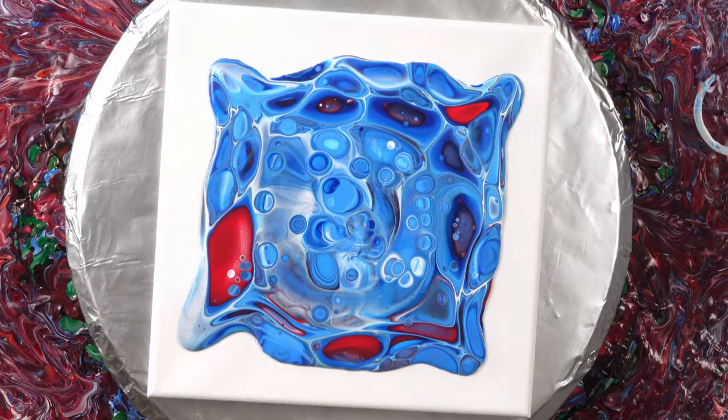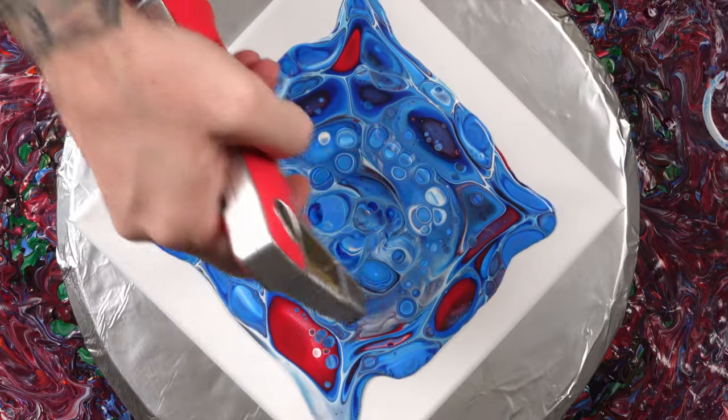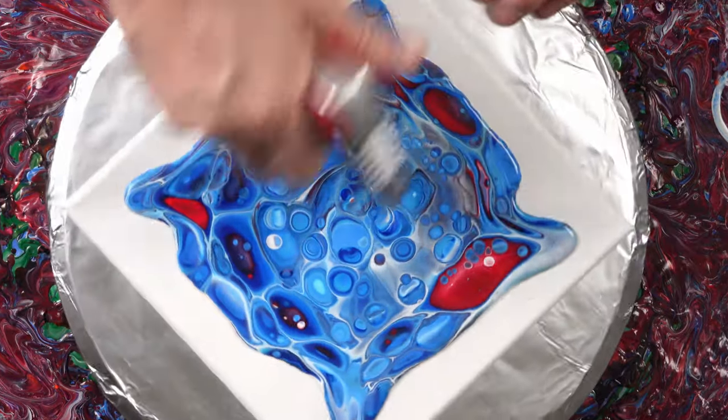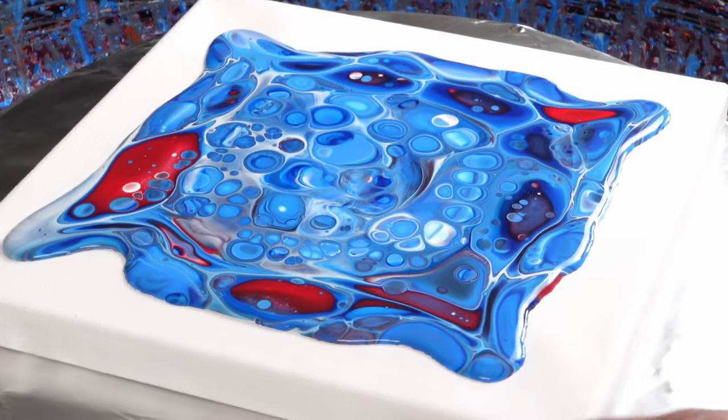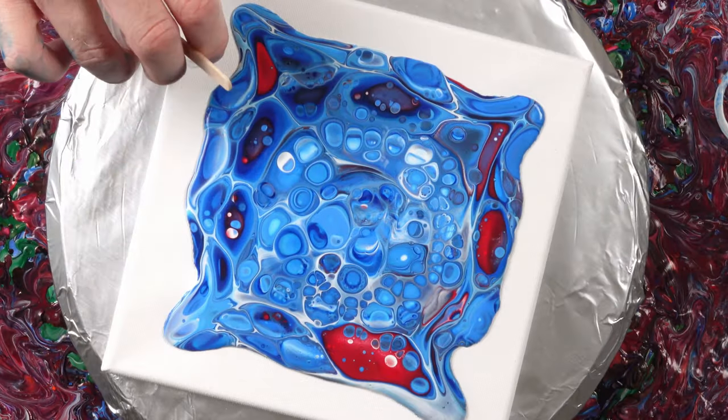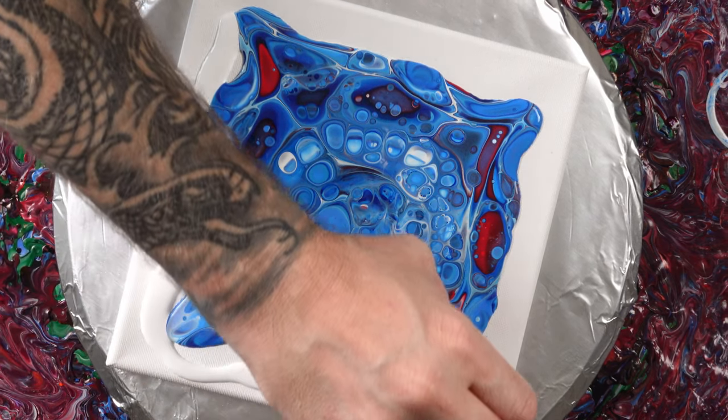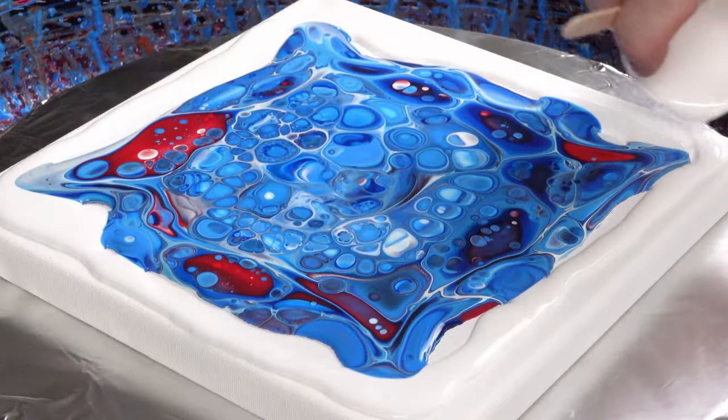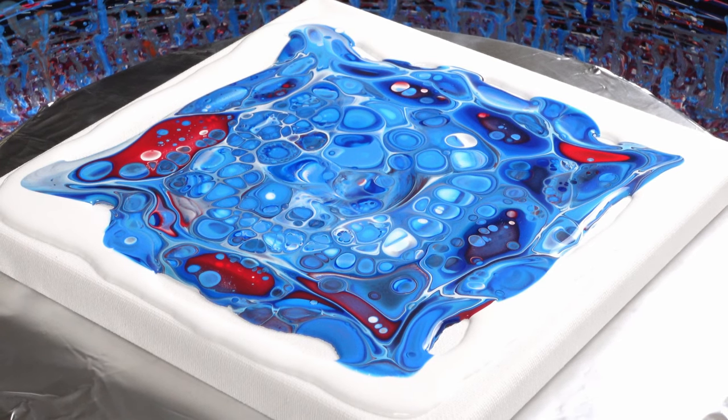And we have a couple spots here that are being stubborn, but we have ways to make them come. All right, so like right in these areas I feel like there could be so much more right there, so I'll just kiss it with the torch just a little bit, not a lot. Then I'm going to take my remaining white and go around this edge here. I want to give this paint something to move on so it's not just rolling under.